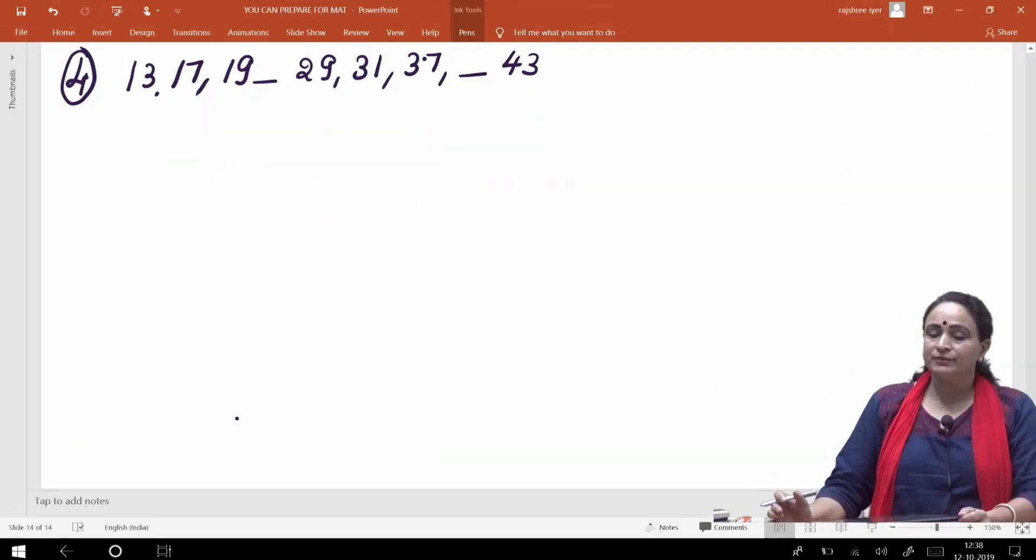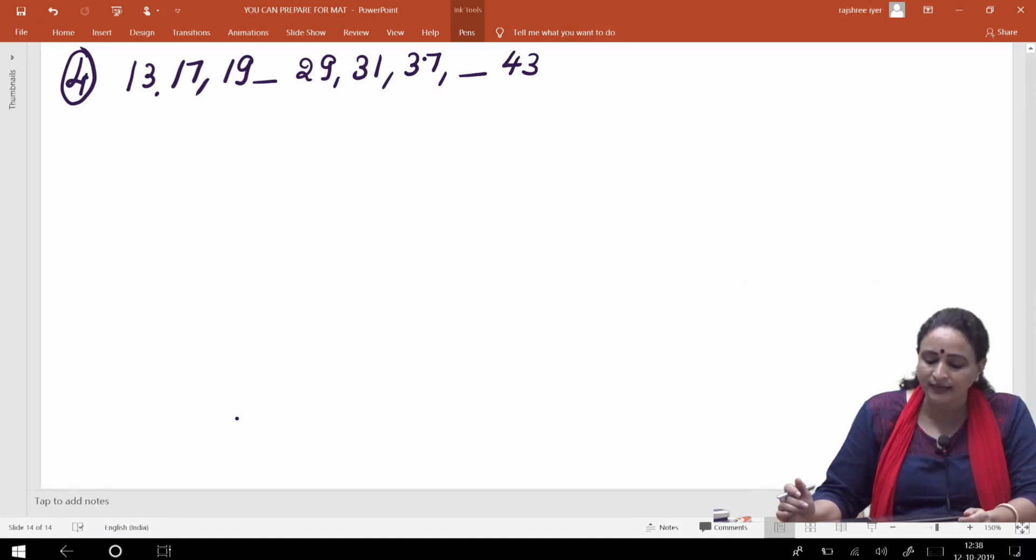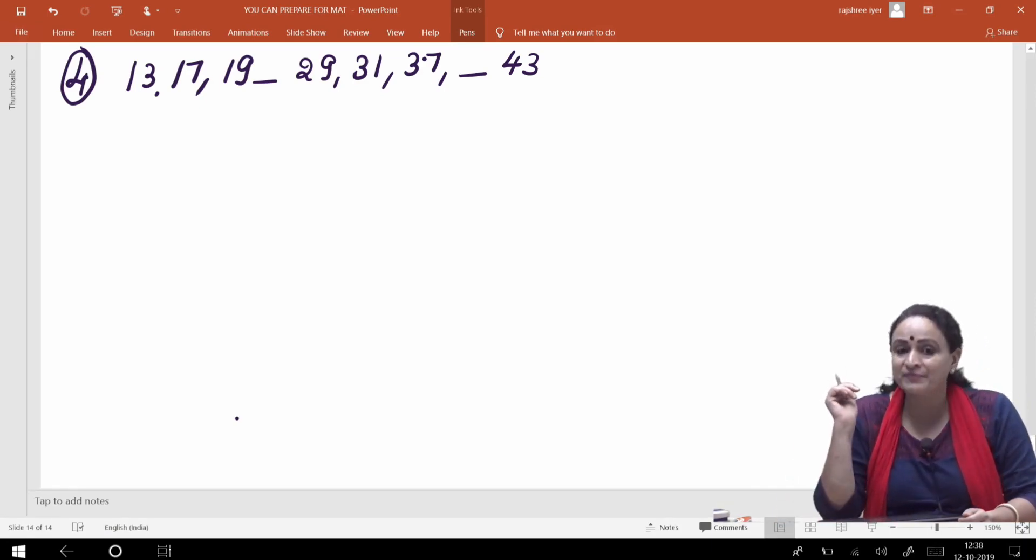Fourth question karte hain, bachcho series wali questions hain hamare paas. Toh yahan jo series humne likhi hai, that is 13, 17, 19, dash, 29, 31, 37, dash, 43. Toh yahan jo fill in the blanks hai, usmein kya kya numbers hai, kya pattern aapke paas ban raha hai, zara sochiye. Okay, soch liya, mil gaya answer.